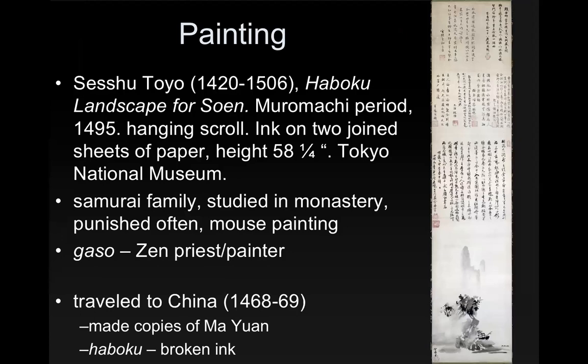When we look at painting, the most famous — and probably one of the most famous painters in all of Japanese history — is Sesshu Toyo. He came from a samurai family, but his parents realized early on that he was not going to be a samurai; he was more of an artist. So they sent him to a monastery where he studied, but that didn't work for him either. He didn't have the discipline or interest in the things that monks had to do, so he was punished often.